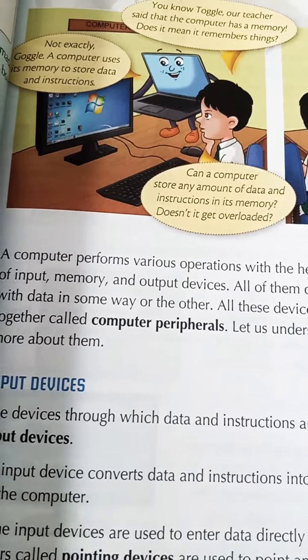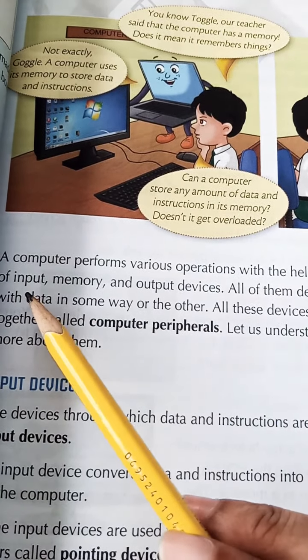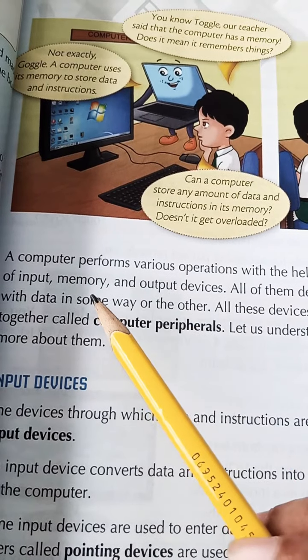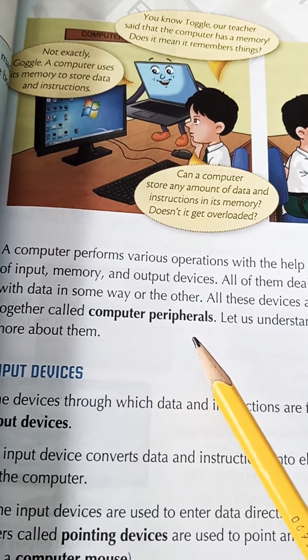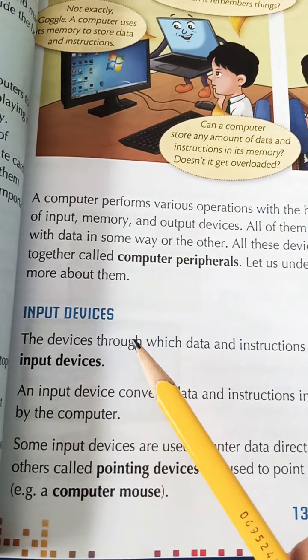In first paragraph, it is described that a computer has various devices like input devices, output devices, memory. In sab ko mila ka kya kehte hain beta? Computer peripherals. Okay, computer peripherals. First, we start with the input devices.